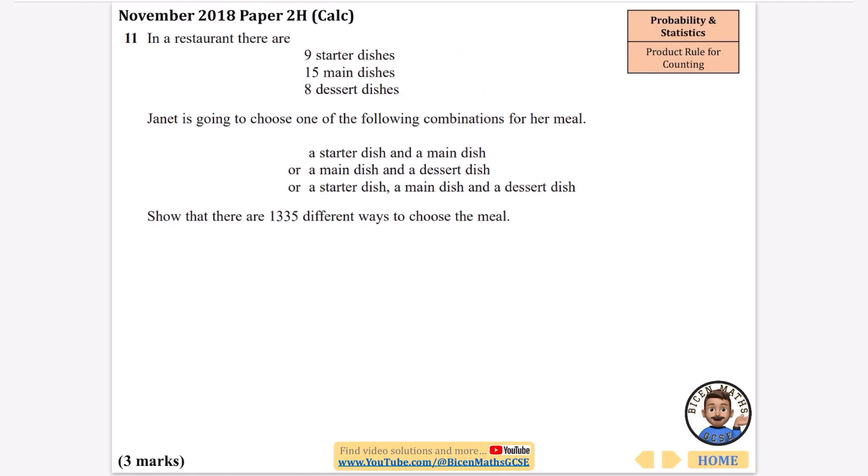This one says in a restaurant there are nine starters, 15 mains and eight desserts. Janet's going to choose one of the following combinations for her meal: a starter and a main, or a main and a dessert, or she's going to go all in and have a starter, a main and a dessert. Show that there are 1,335 different ways to choose the meal.